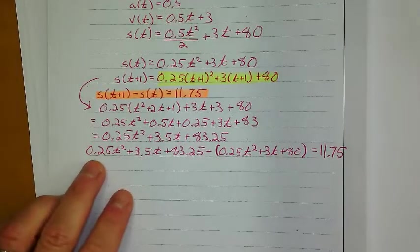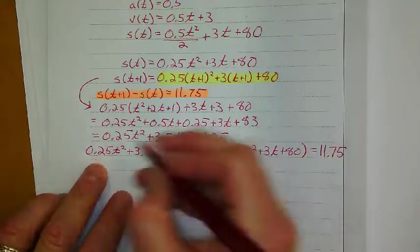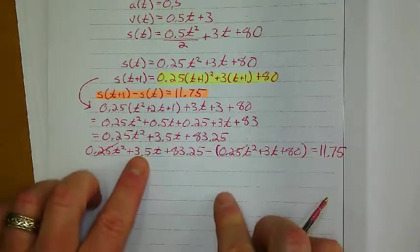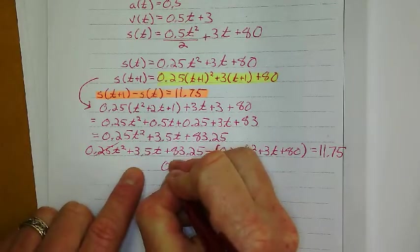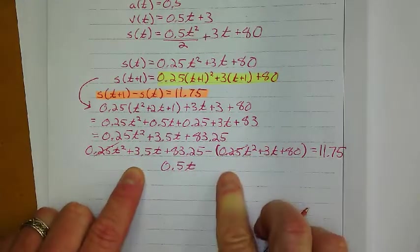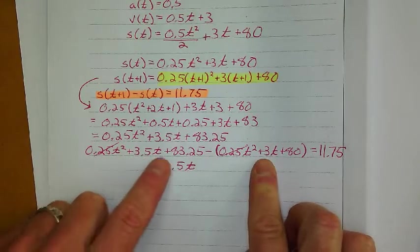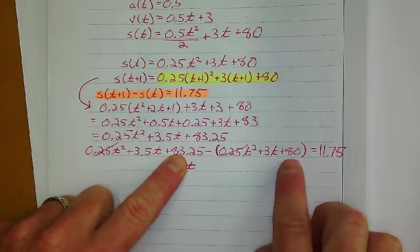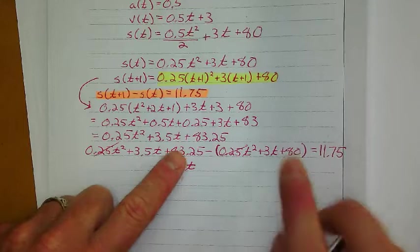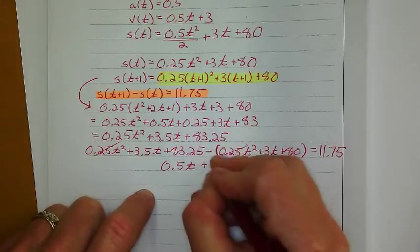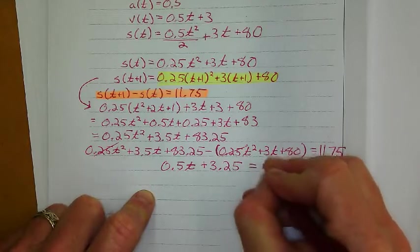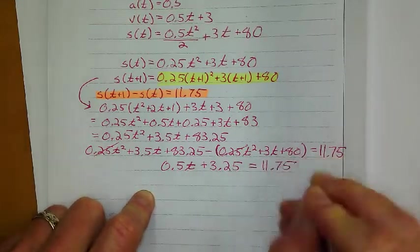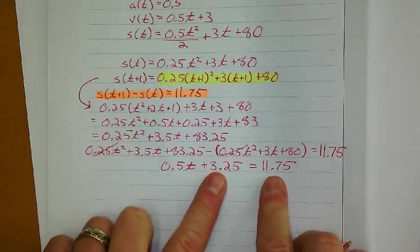So what do I get? These cancel out. 3.5t minus 3t gives me 0.5t.